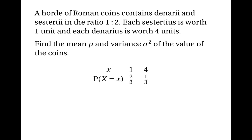In order to do this, we need to know the probability distribution for the population. The population consists entirely of the numbers one and four — one is the value of the cistercius and four is the value of the denarius. Two thirds of the coins are cistercii, so the probability of getting a one is two thirds and the probability of getting a four is one third. The population mean is the expected value of a coin: one times two thirds plus four times one third, which gives us two. So the population mean is two.